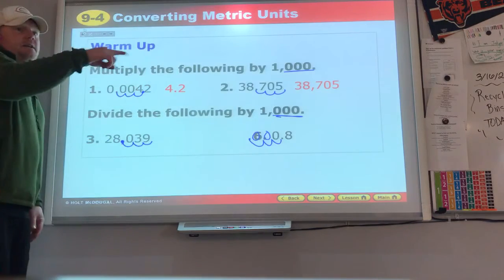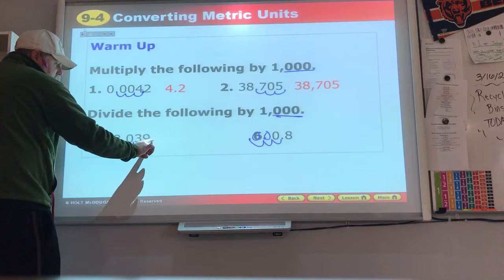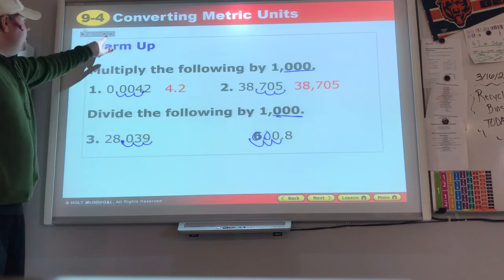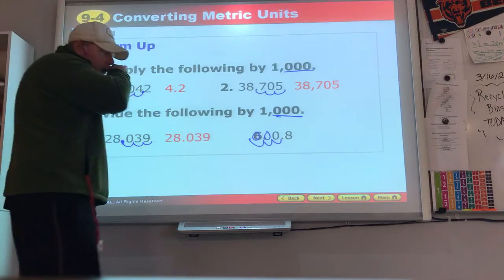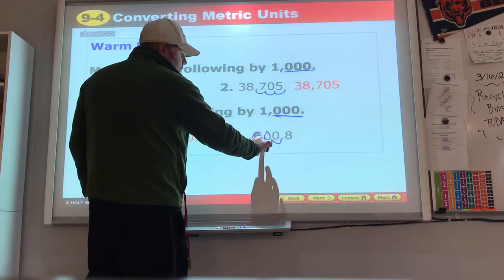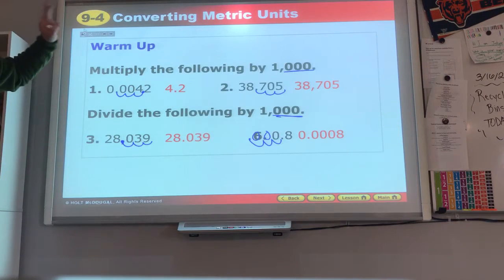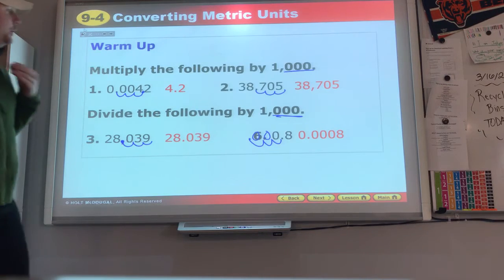Now when you're dividing, you do the same thing, count the zeros but in the opposite direction. Start at the decimal which is right here, to the right of it, one, two, three. Twenty-eight point zero three nine, a much smaller number. Start at the decimal here, one, two, three spots. We have 0.00008 and we do have a much smaller number.